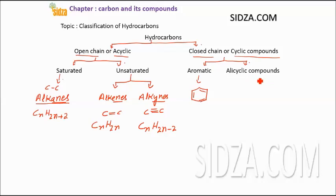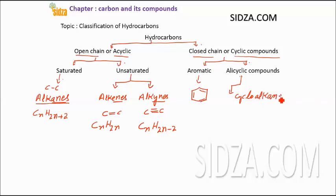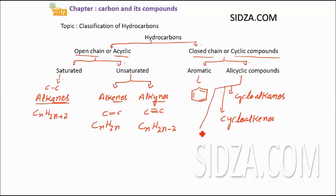Alicyclic compounds are of three main types. These are cyclic compounds which contain either a single bond, a double bond, or a triple bond. Alicyclic compounds can further be categorized into cycloalkanes, cycloalkenes, and cycloalkynes.